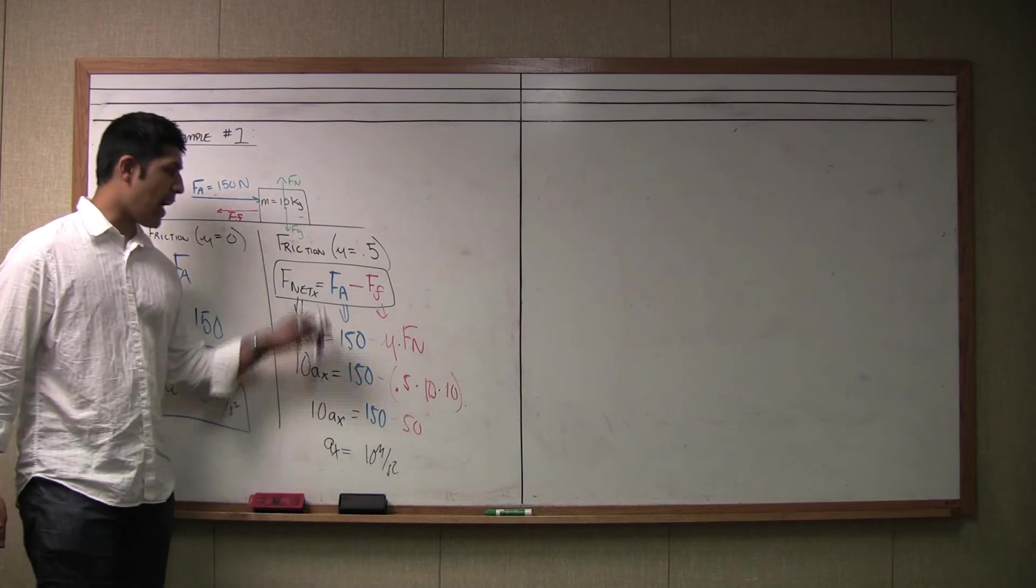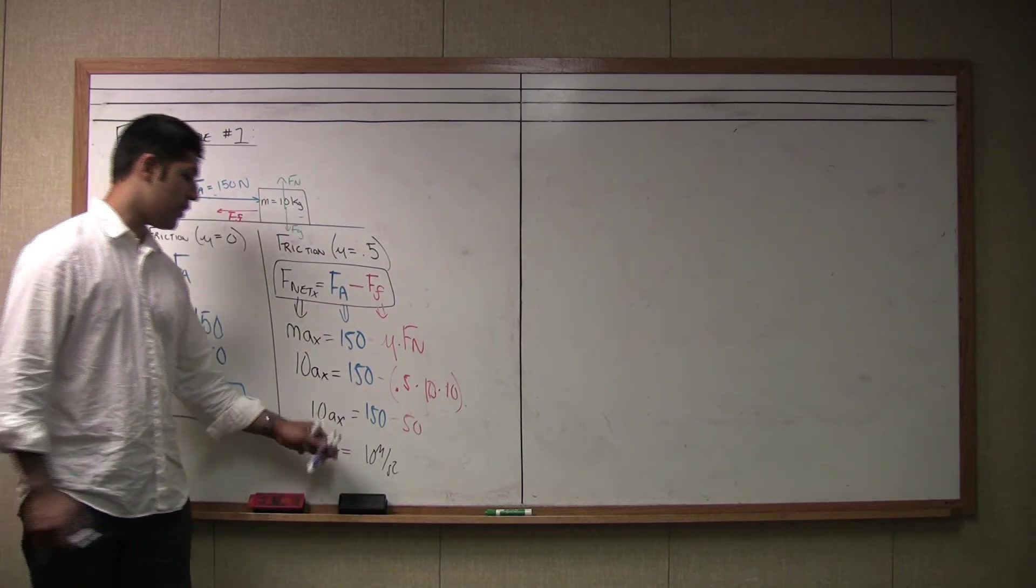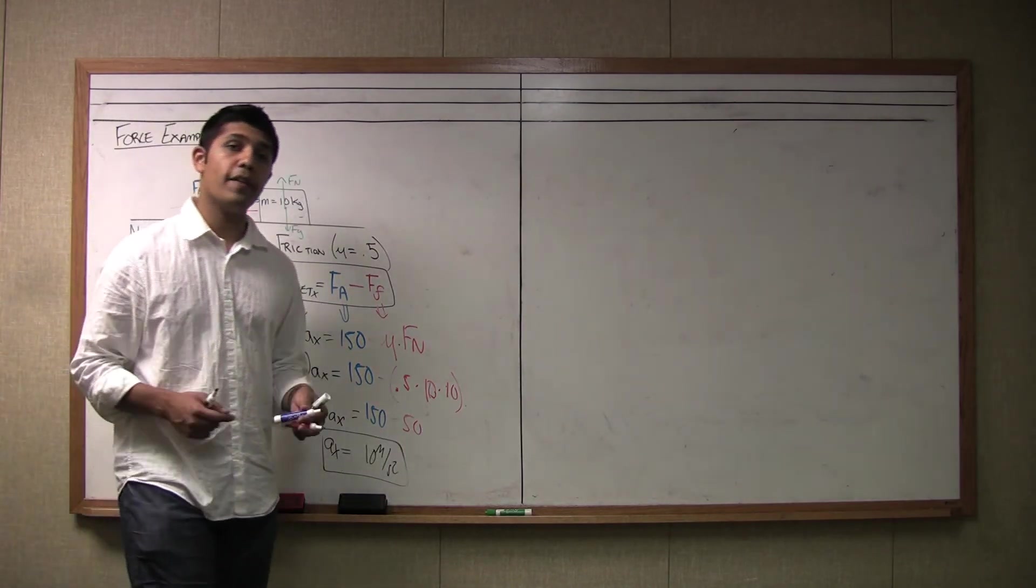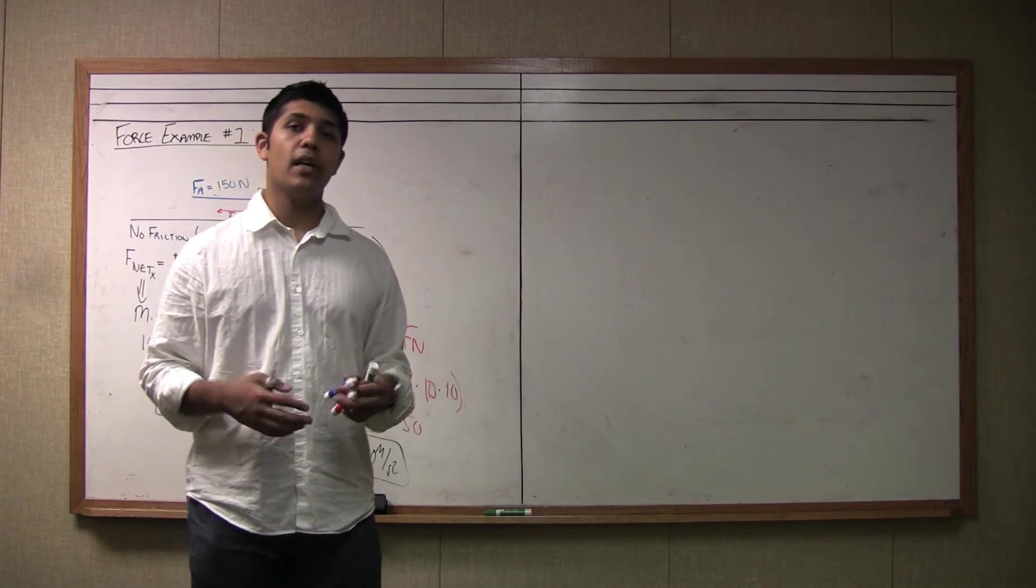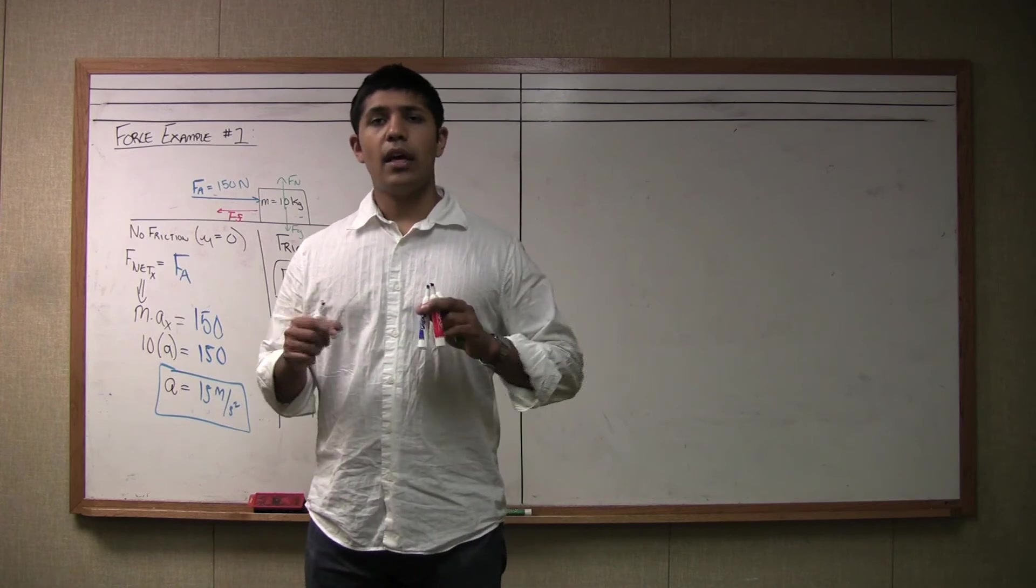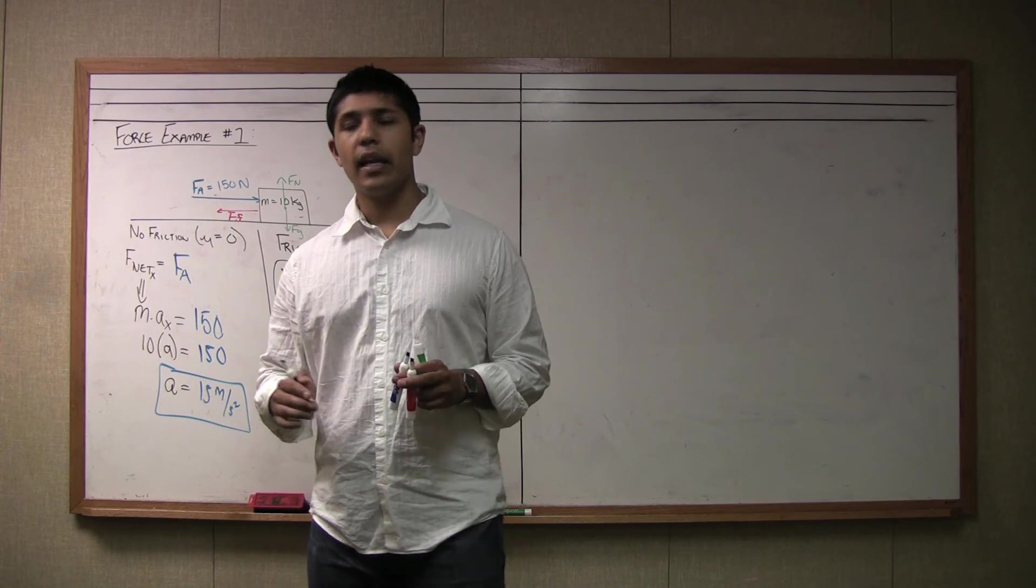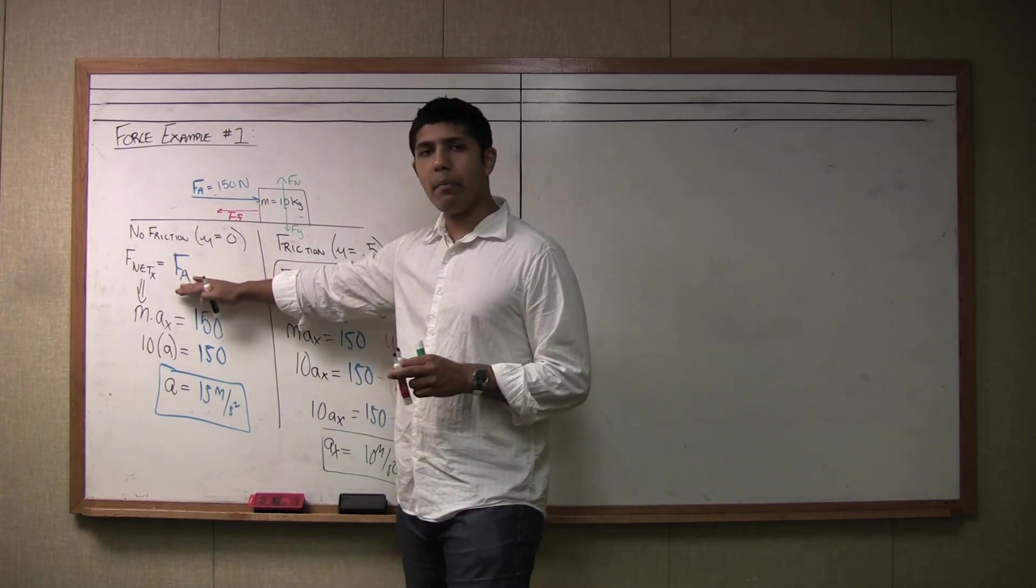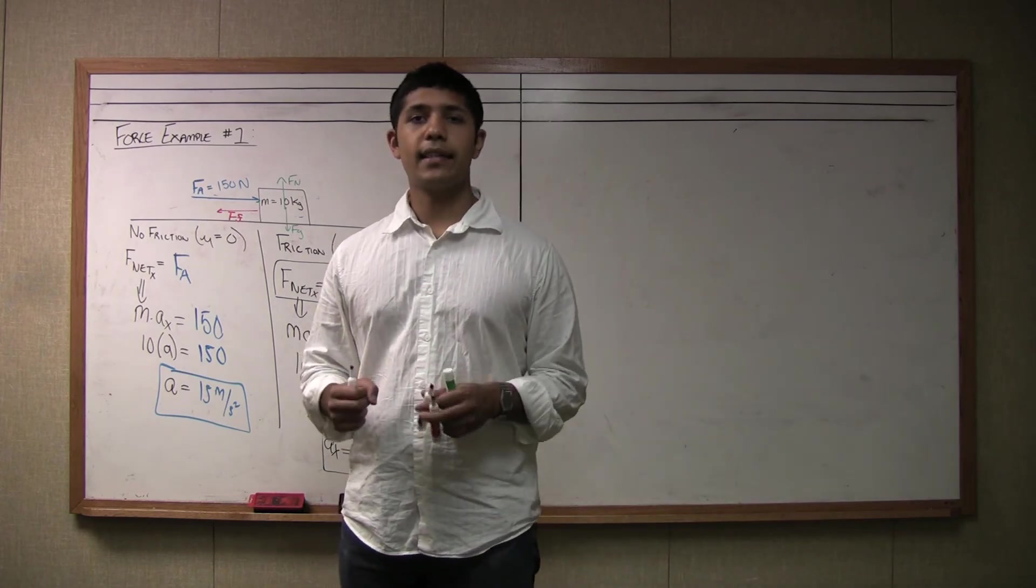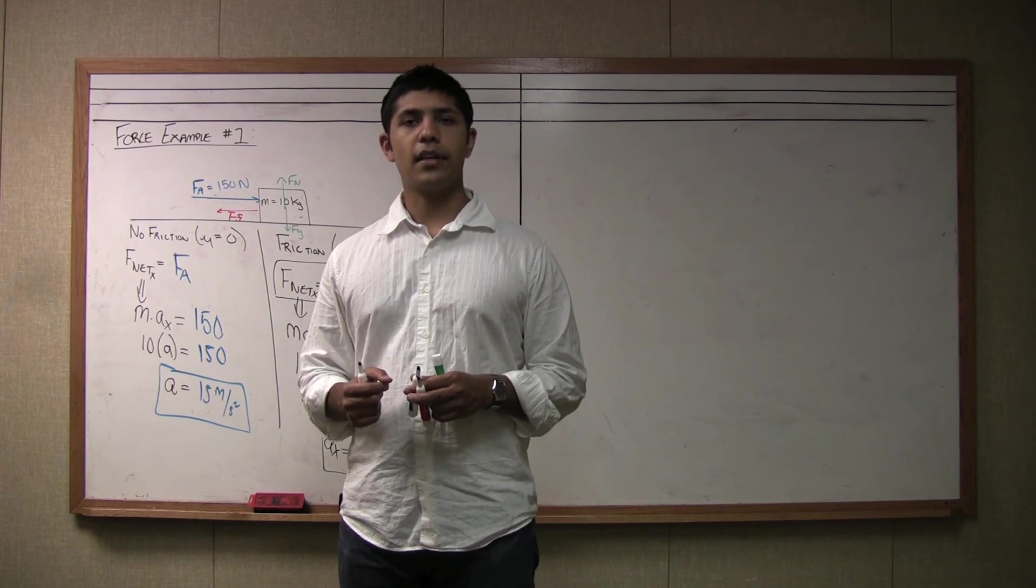We can see that as I added friction, my acceleration value went down from 15 to now 10, which definitely makes sense. That's an important part of physics is to get logical behind your processes and your techniques. But this is really the technique. It's called finishing up a force diagram and solving it using F net equations. As long as you can do the step where you are writing the F net in terms of your actual forces, you'll find a lot of success in this material. I'm going to do another problem with an incline plane next, so stick around.